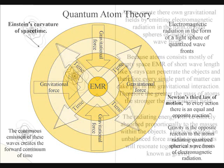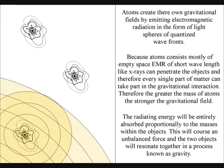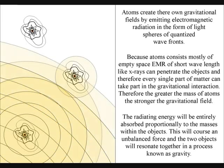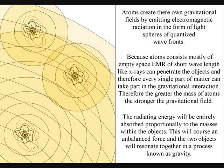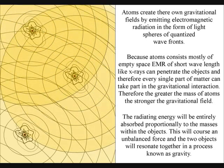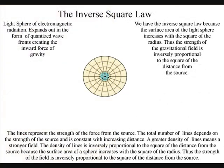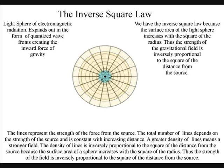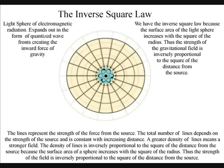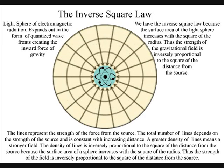Because atoms consist mostly of empty space, electromagnetic radiation of short wavelengths, like X-rays, can penetrate the objects, and therefore every single part of matter can take part in the gravitational interaction. We have the inverse square law because the surface area of the light sphere increases with the square of the radius. Thus the strength of the gravitational field is inversely proportional to the square of the distance from the source.